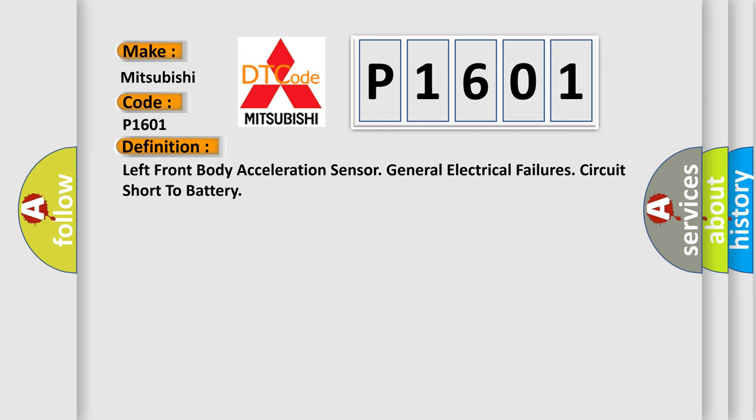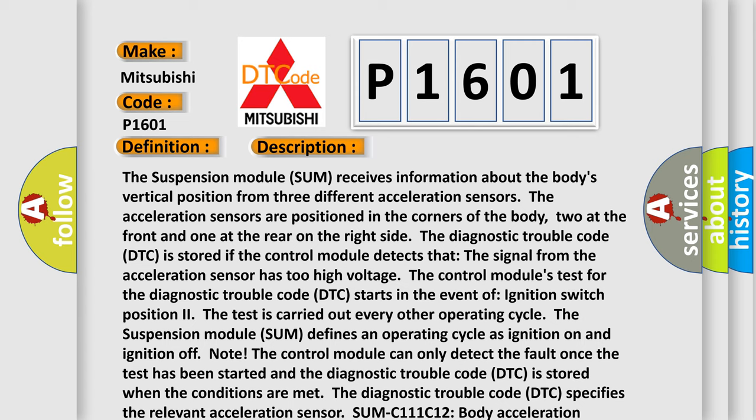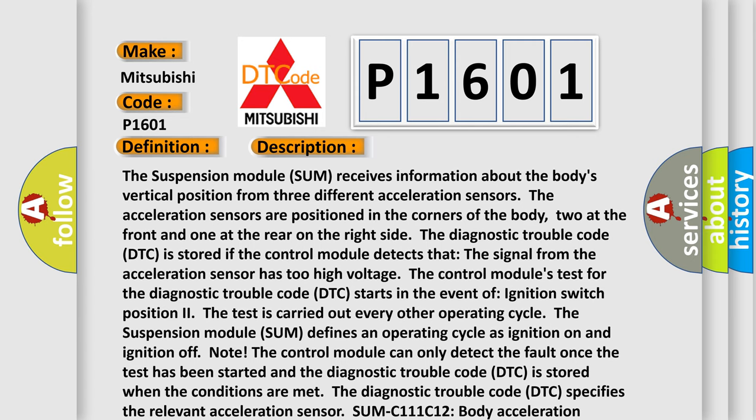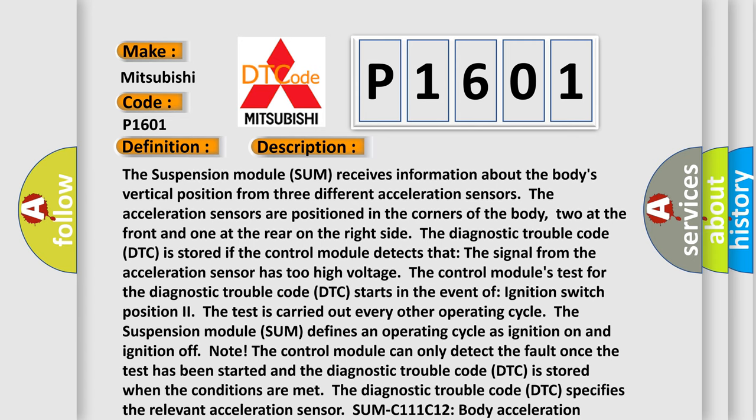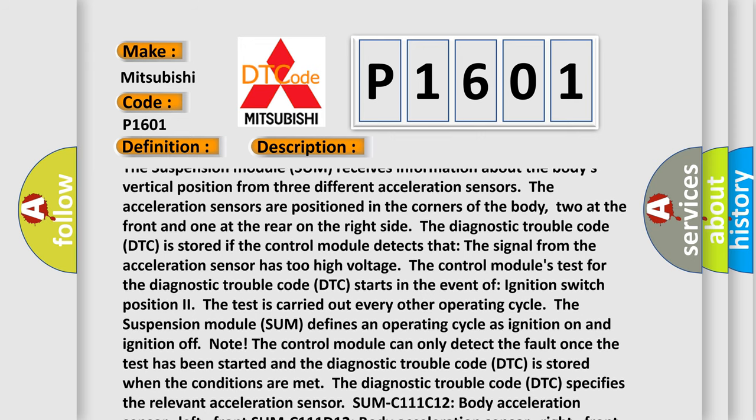And now this is a short description of this DTC code. The suspension module SUM receives information about the body's vertical position from three different acceleration sensors. The acceleration sensors are positioned in the corners of the body, two at the front and one at the rear on the right side.